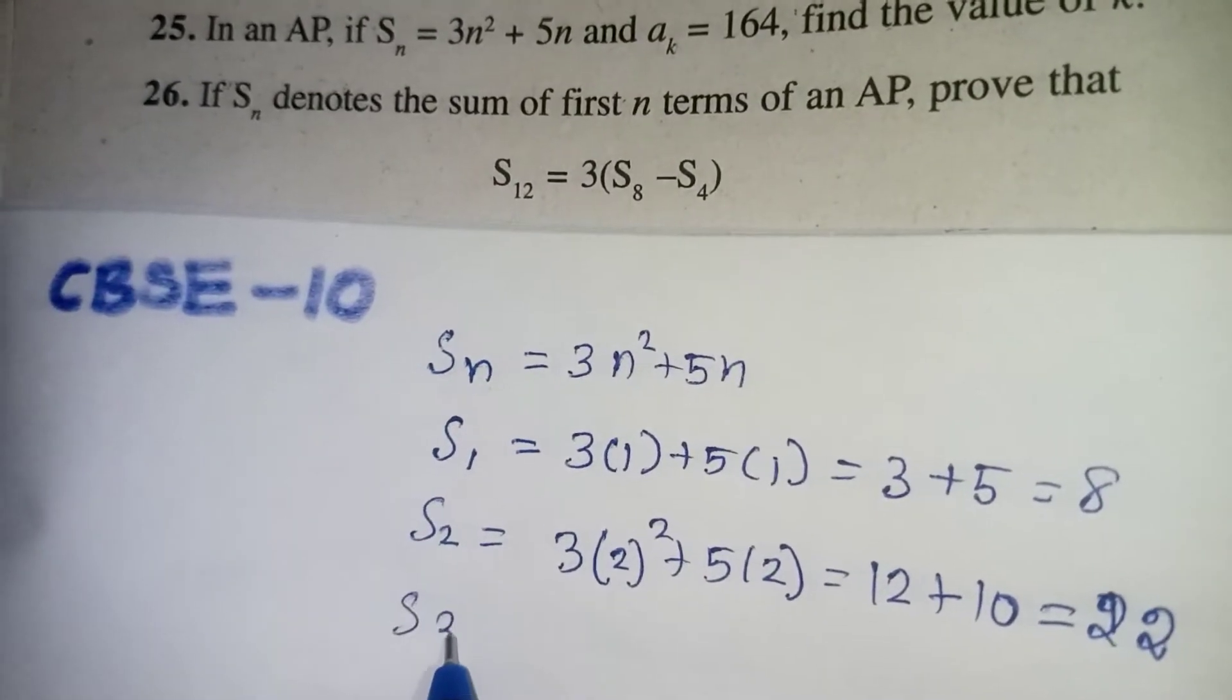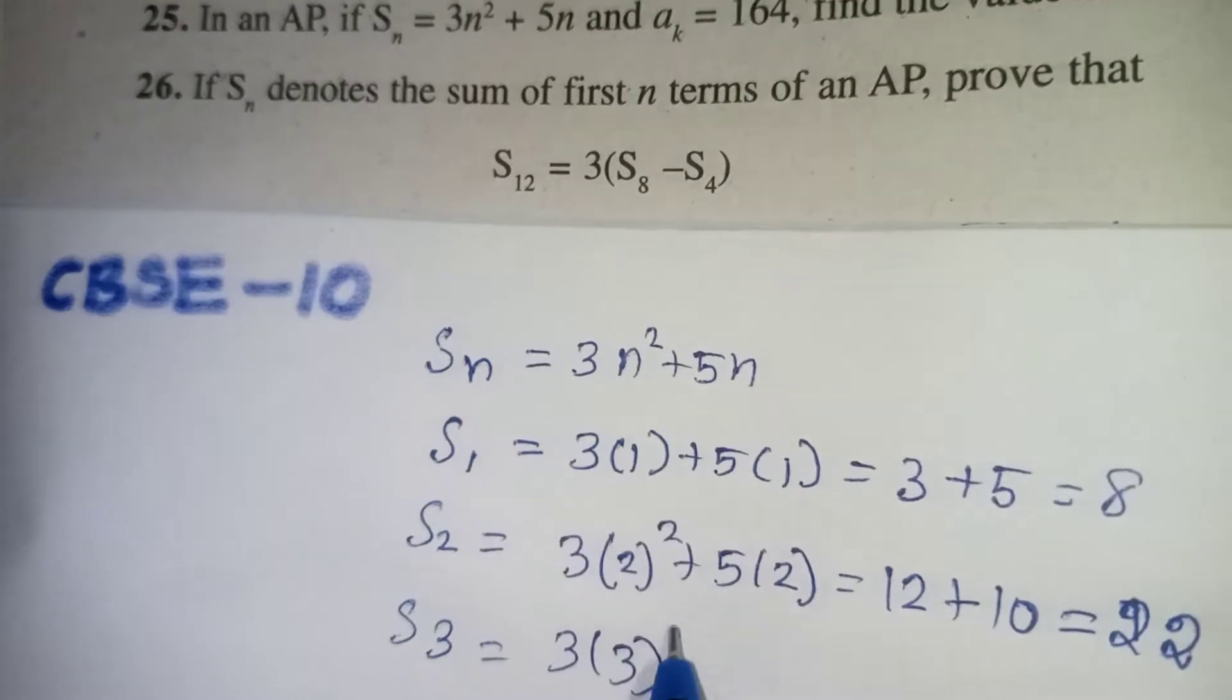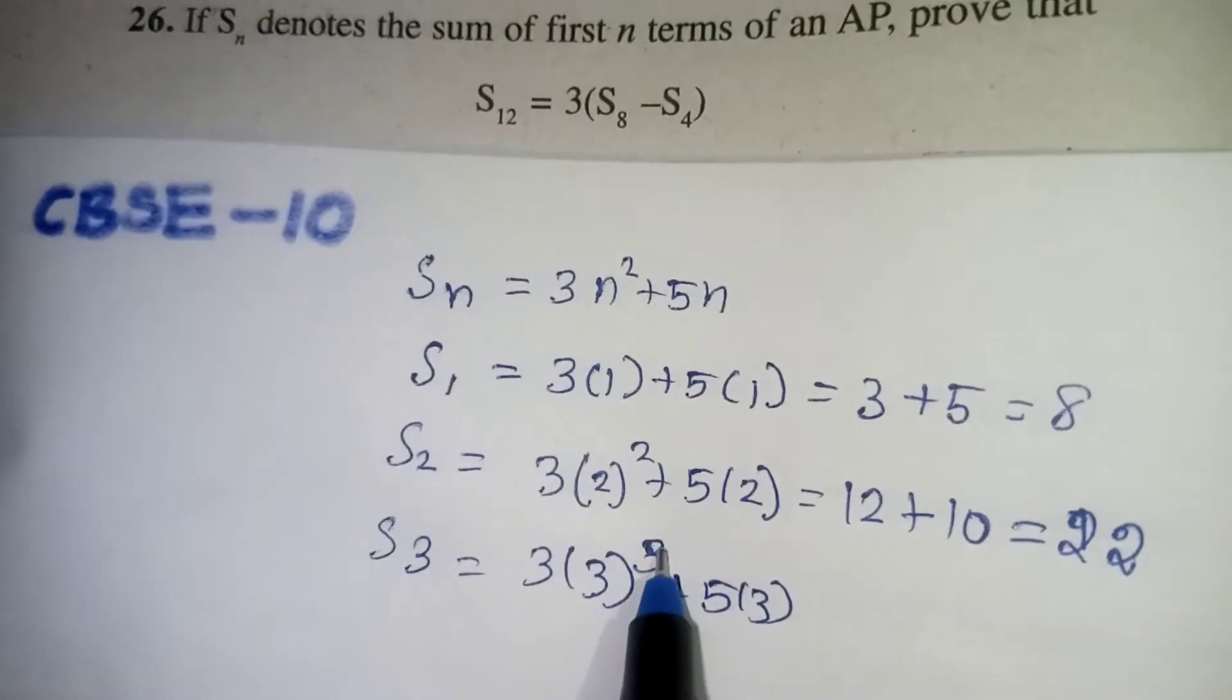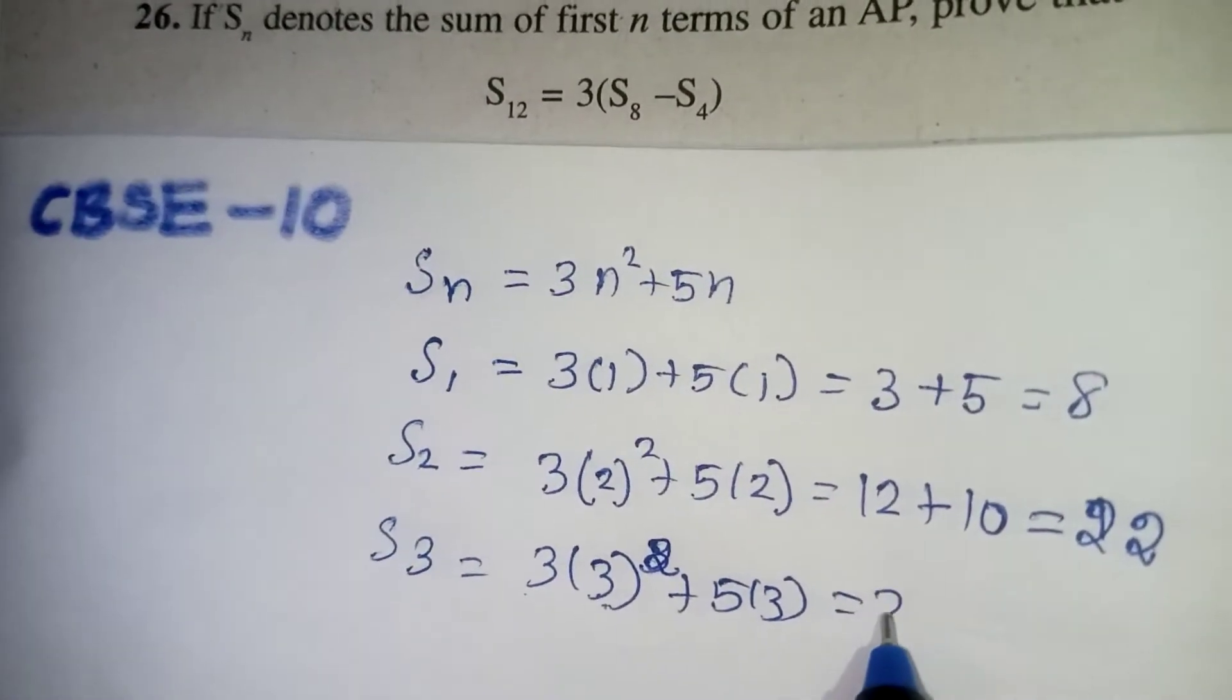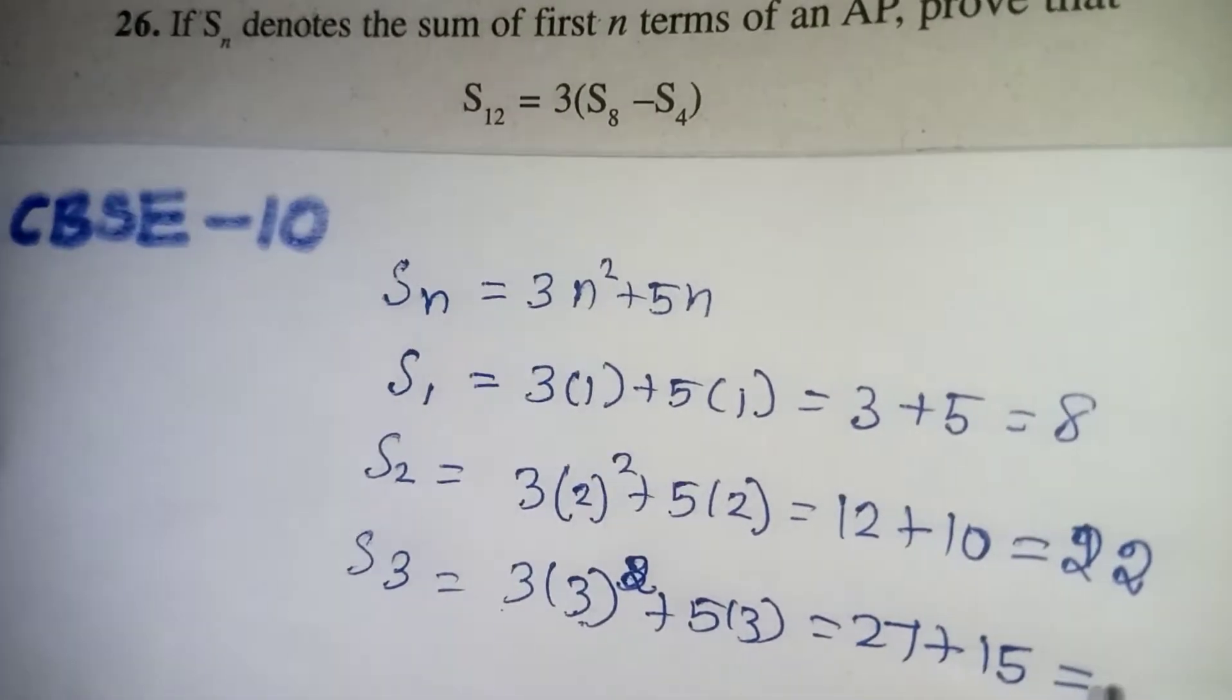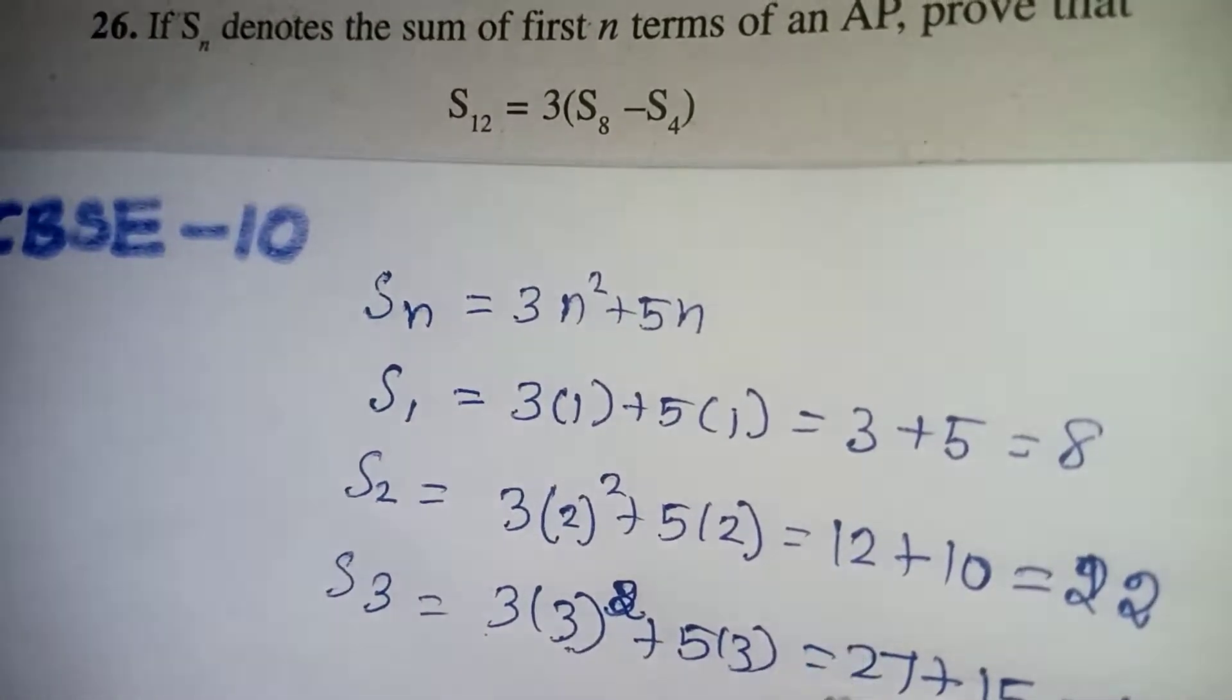Now S3. S3 value 3 into 3 squared, wherever N comes you put the 3, plus 5 into 3. Now 3 squared is 9, 9 threes are 27, plus 5 threes are 15. If I add these two, 42 is coming. Now we found out what is S1, S2 and S3.